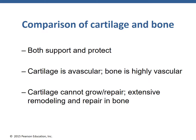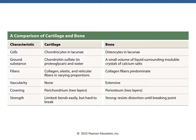When comparing cartilage and bone, both offer support and protection. However, cartilage is avascular, whereas bone is highly vascular, meaning bone has a rapid and extensive repair and remodeling process, whereas cartilage cannot repair itself. Other differences: the cell for cartilage is chondrocytes, whereas in bone it's osteocytes. Ground substance for cartilage is chondroitin sulfate; for bone it's calcium salts with a very small volume of liquid. Fibers in cartilage vary in proportions of collagen, elastic, and reticular depending on the type, whereas bone is almost entirely collagen. Vascularity: none in cartilage, extensive in bone. Covering: perichondrium in two layers for cartilage; periosteum in two layers for bone. Strength of cartilage is limited — it bends easily but is hard to break — whereas bone is very strong and resists distortion until its breaking point.